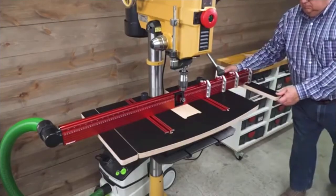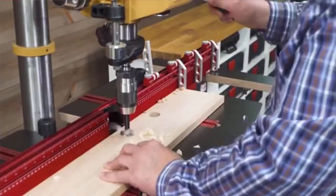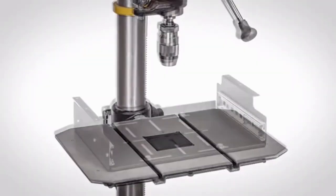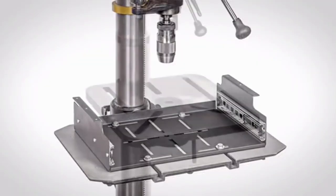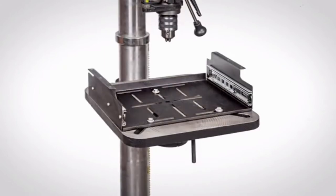When you're working on longer stock, just slide the extensions out for extra support. In fact, we haven't found one drill press yet that it won't fit. Whether it has T-slots or through slots, straight or diagonal, it's going to fit.